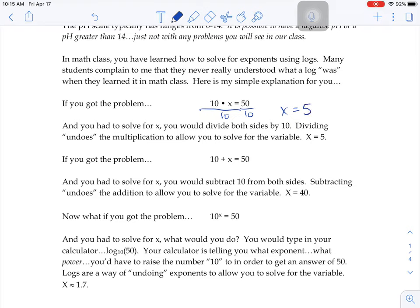And then you could solve and figure out that x is 5 because dividing is a way of undoing that multiplication. Or if you got 10 plus x equals 50, you could subtract 10 from both sides. And then you would know that x equals 40 because subtraction is a way of undoing that addition.